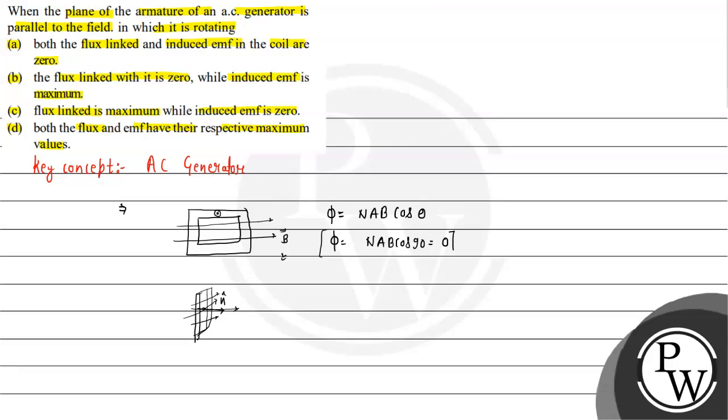The EMF is minus d phi by dt, the flux differentiation. Taking the constant out and differentiating, we get NAB omega sin theta. When theta is 90 degrees, sin 90 is 1, so we have the maximum EMF when the plane of the armature is parallel to the field.